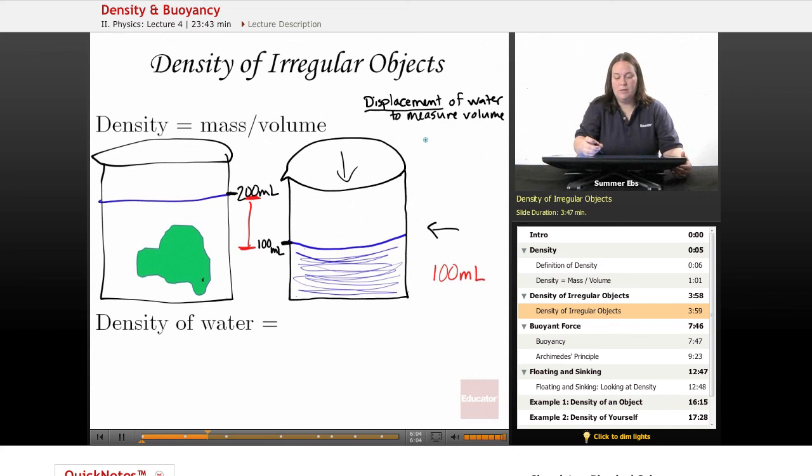That's 100 milliliters. For displacement, you take the difference in the two measurements. One measurement you take before you put the object in the water, and one measurement after you put the object in the water.